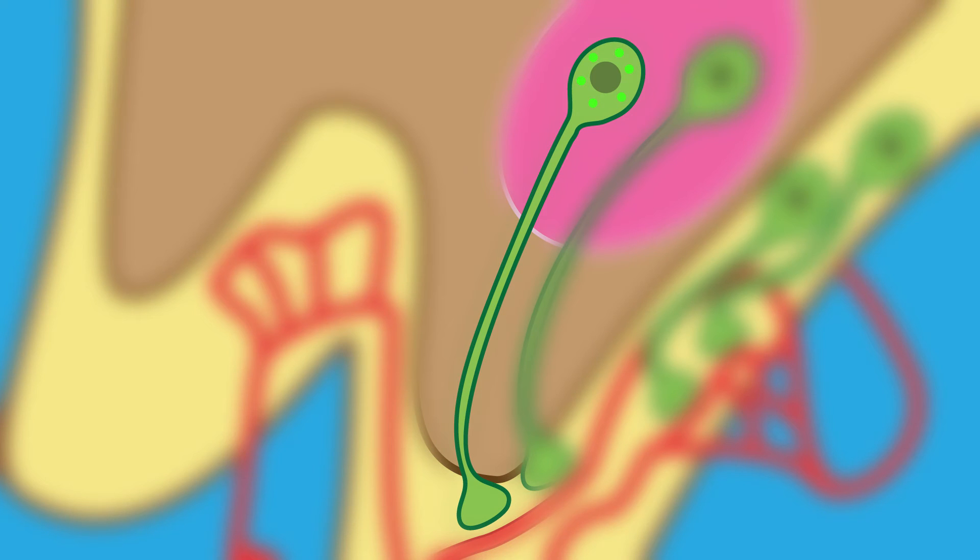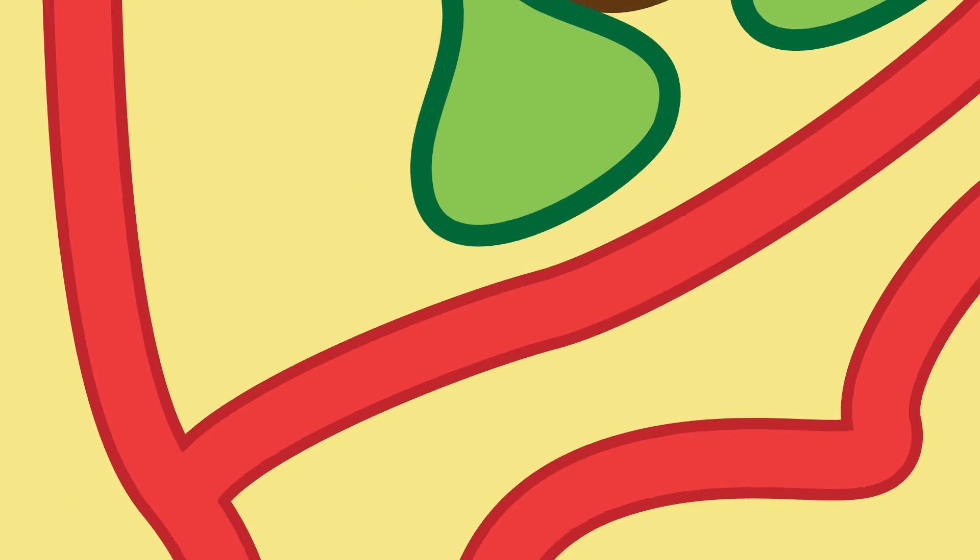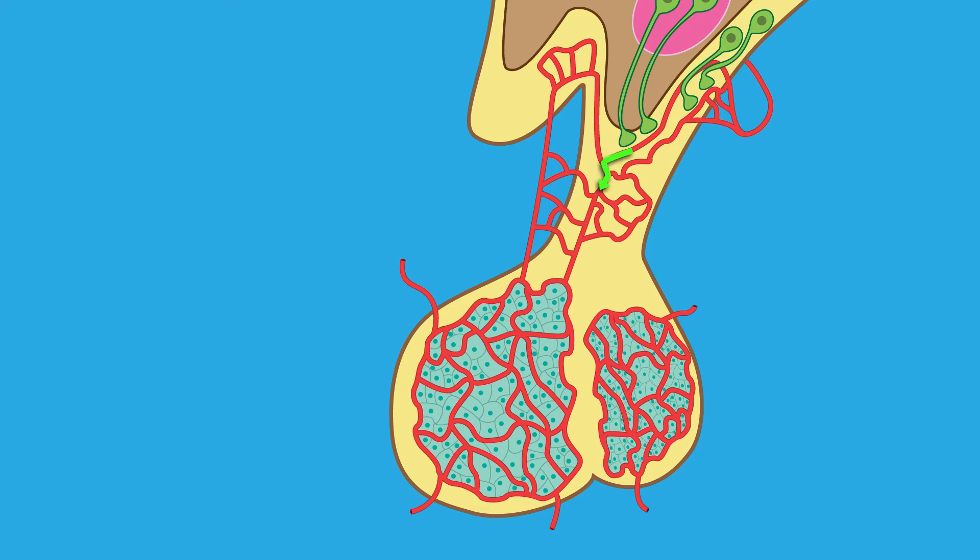After TRH is synthesized in the cell body, it is transported down the axon and released by exocytosis into the hypophysial portal system, where it travels a short distance to the anterior pituitary. Once it reaches the thyrotrophs, it binds the TRH receptors and stimulates the synthesis and release of TSH.